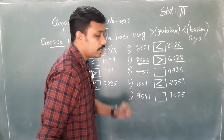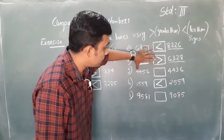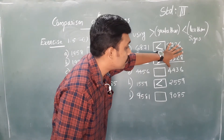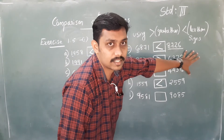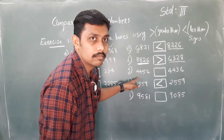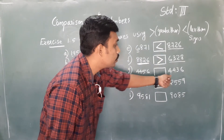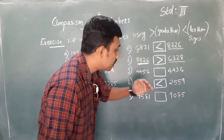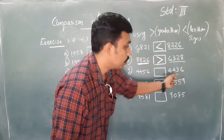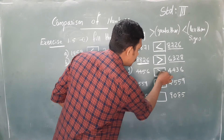Next problem: 4456 and 4436. Check the left extreme — same. Check the hundreds place — also same. But check the tens place: 5 here and 3 here. So 4456 is the larger number. We represent it like this.